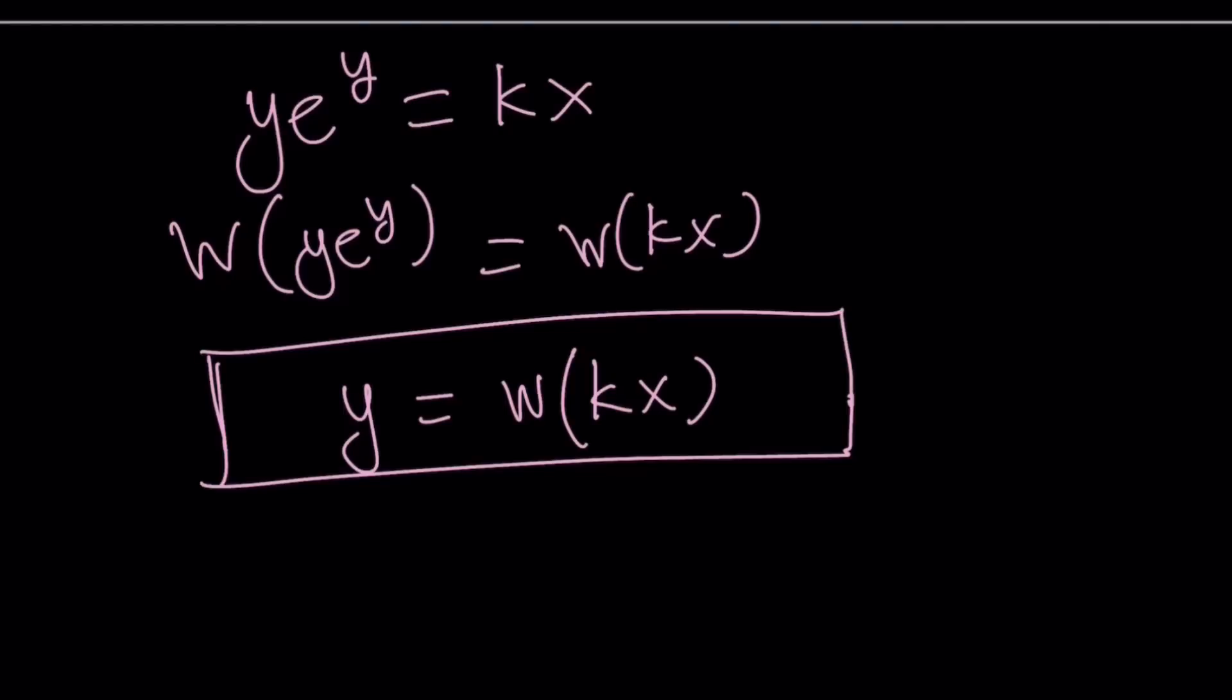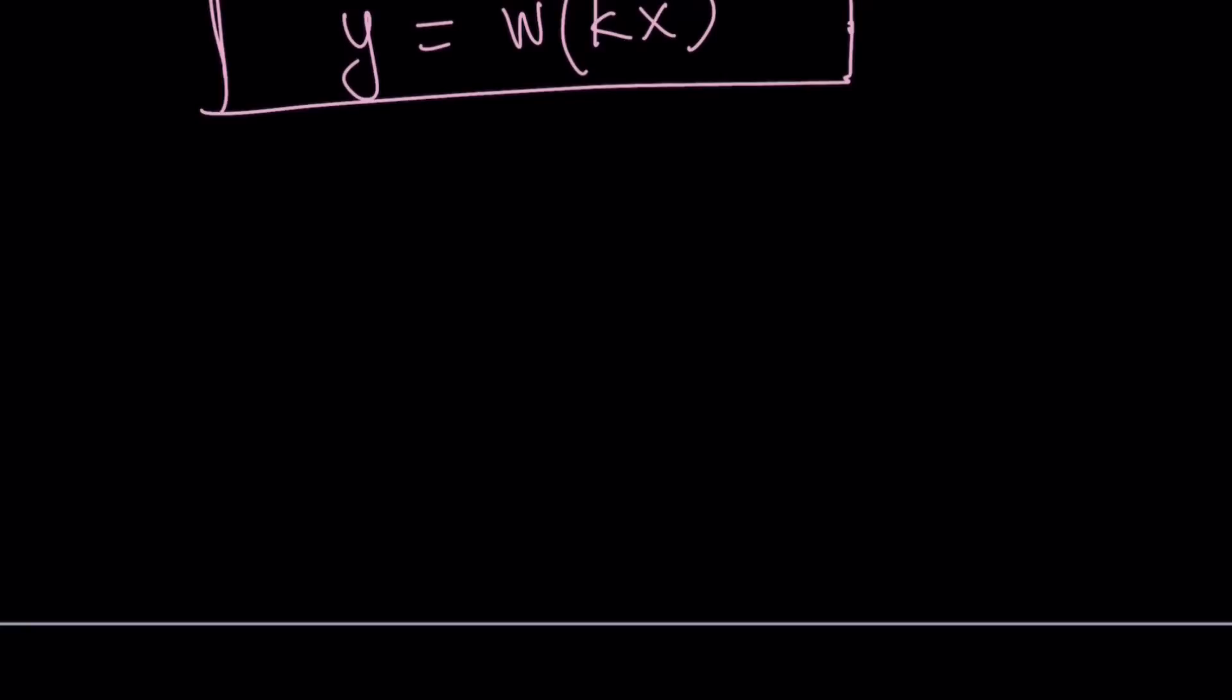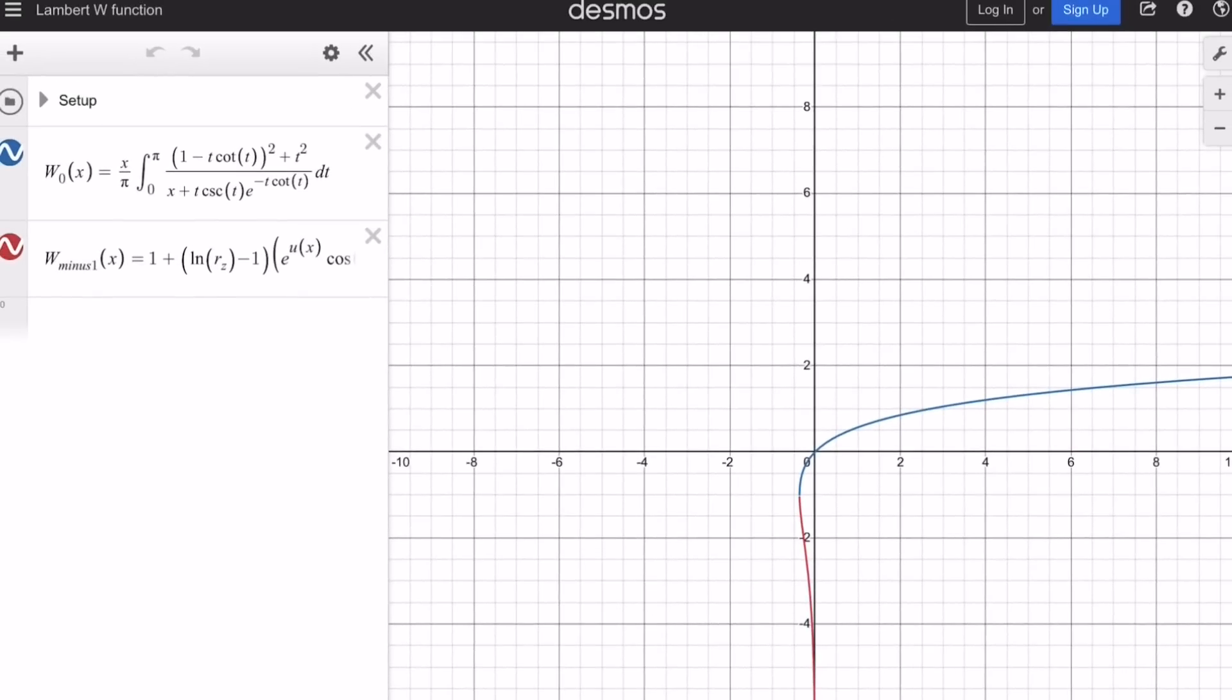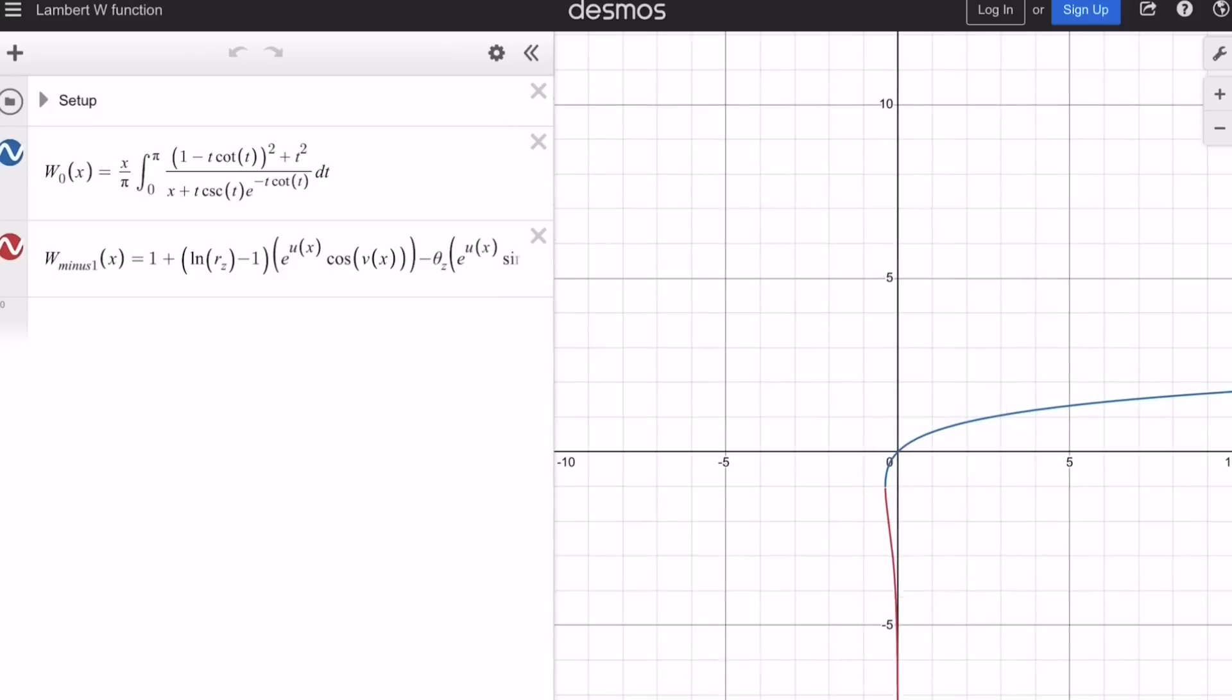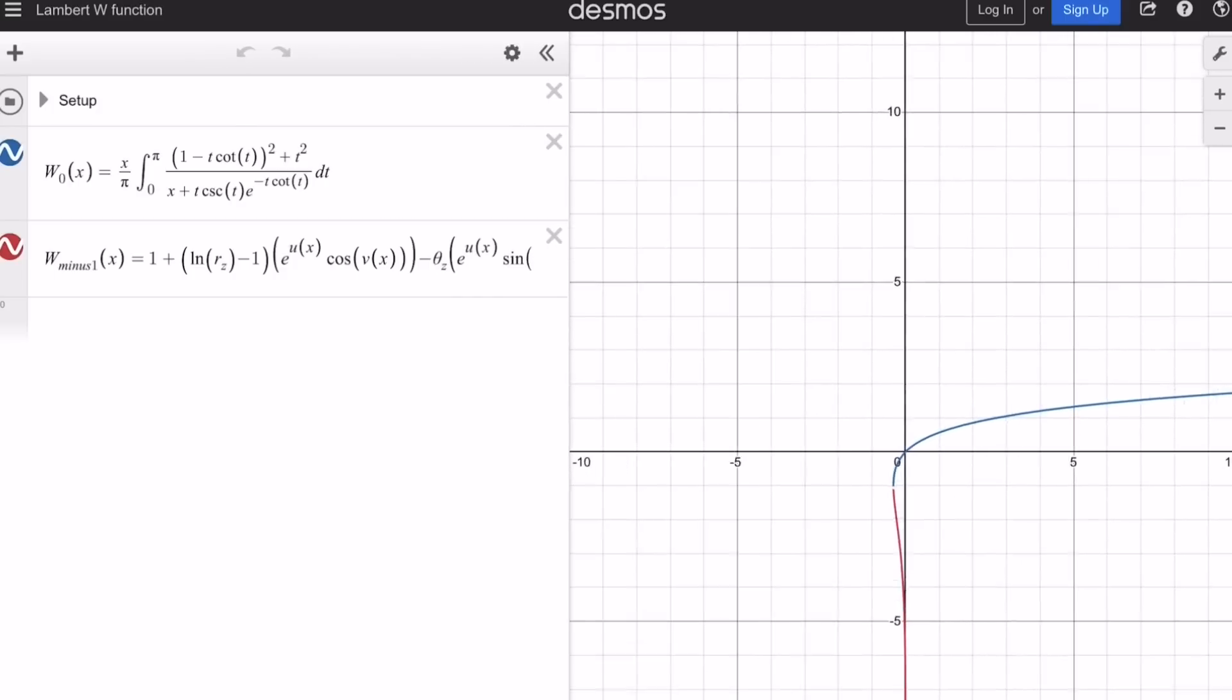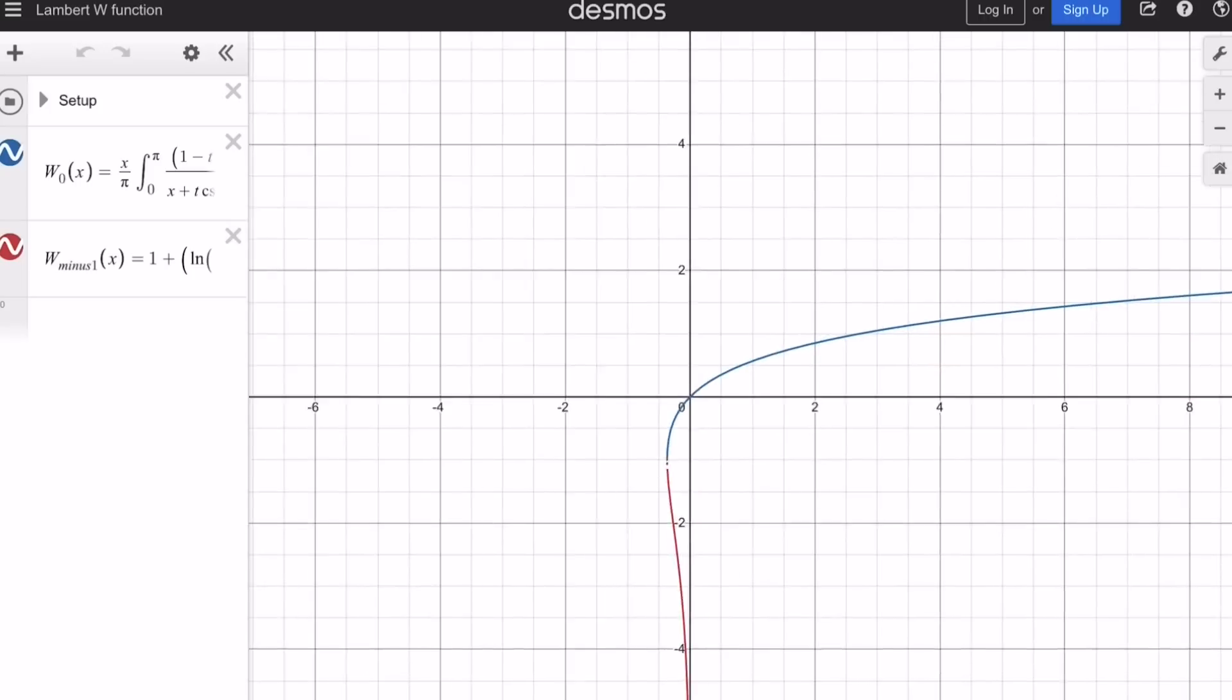All right. So this brings us to the end of this video. But before we finish the video, I also want to show you. I'd like to show you a graph of Lambert's W function. So let's go ahead and take a look at that real quick. And I'll also share the link with you down below. So this is what Lambert's W function looks like. And there's two expressions. And like I said earlier, I'm going to share this link down below. So you can go ahead and see for yourself what this looks like.